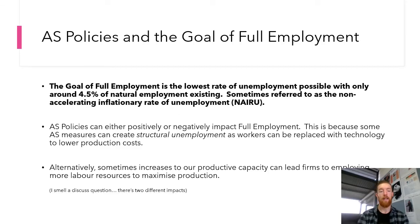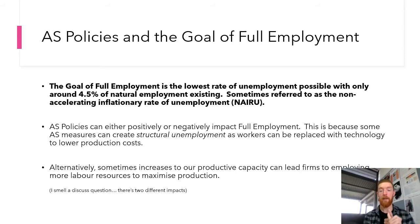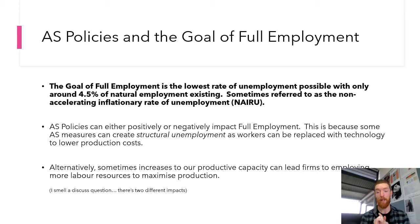Lastly, full employment. The goal of full employment is the lowest rate of unemployment possible with only around 4.5 percent natural unemployment existing — sometimes referred to as the non-accelerating inflationary rate of unemployment, or NIRU. That first sentence is all you really need for the goal of full employment. Aggregate supply-side policies can go either way — they can positively or negatively impact full employment. Sometimes they negatively impact it because AS measures can create structural unemployment as workers are replaced with technology to lower production costs.